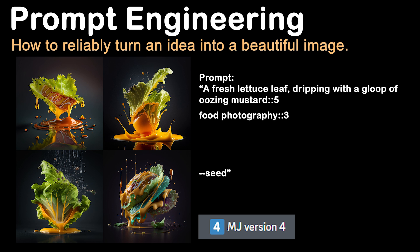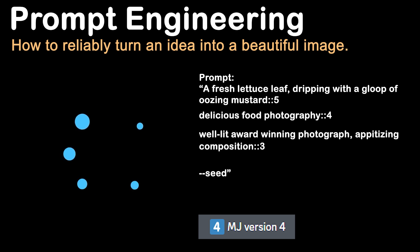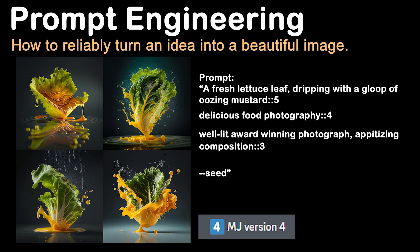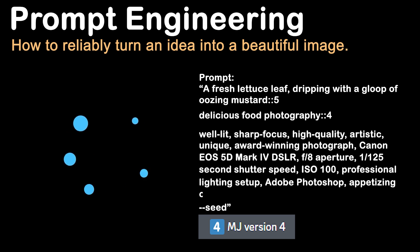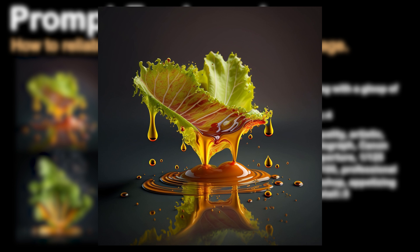But can we improve it? The actual lettuce looks kind of odd. Let's add some tags for a little more fine control. Fresh lettuce leaf dripping with a gloop of oozing mustard — delicious food photography, well-lit, award-winning photograph, appetizing composition. Let's toss in some specific camera settings to really solidify the image, add some lighting info, a bit of retouching — and take a look at that top left oozy, goopy goodness. My god, it's beautiful. This is why we make AI art.